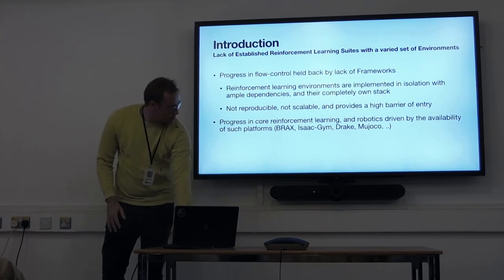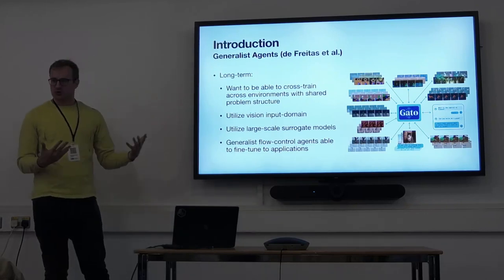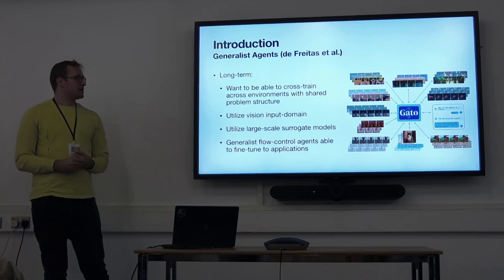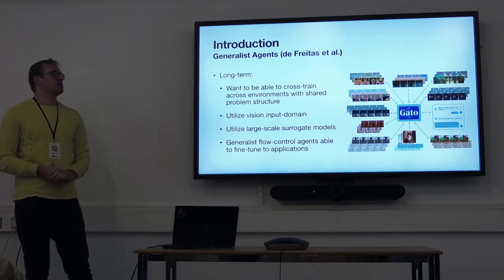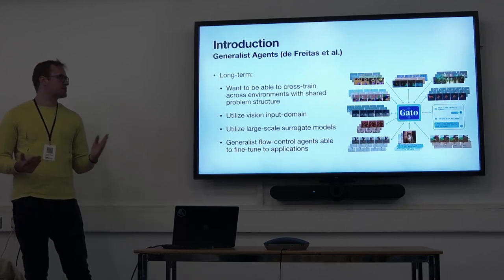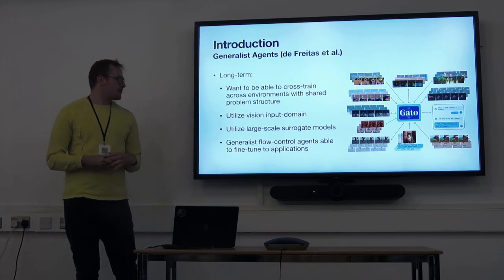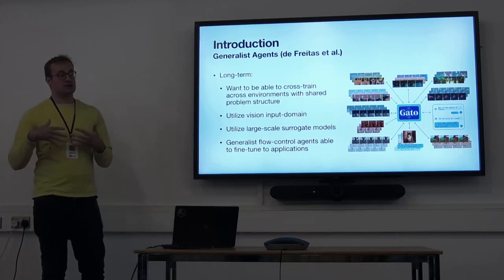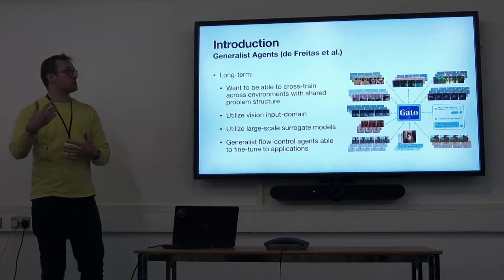Drake is more on the robotics side and MuJoCo is sort of the grand old man in the room. The long-term motivation is that more and more algorithms these days try to use a lot of environments at the same time to have much more capable agents. For example, GATO introduced generalist agents trained across 600 environments, which right now would be absolutely impossible because we don't have anywhere close to that in any framework. You also want to be able to utilize other components — like if you have a graph in a network circuit, can we utilize this in the computation? Right now the answer is no.